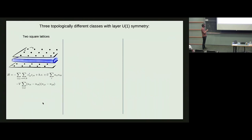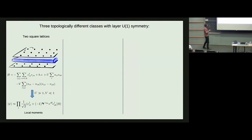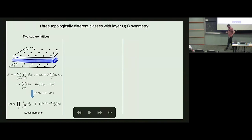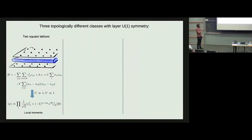We can break the SU(2) symmetry down to U(1) by adding a nearest-neighbor interaction. At half filling we get antiferromagnetic order, and with a next-nearest-neighbor interaction we get an easy-plane antiferromagnet. If U is very large, we have local moment formation, and the classically ordered ground state is a product state in real space. In the exciton language with layer U(1) symmetry, electrons form bonding states on one sublattice and anti-bonding states on the other, but really the low-energy physics is dominated by quantum fluctuations of these local moments.